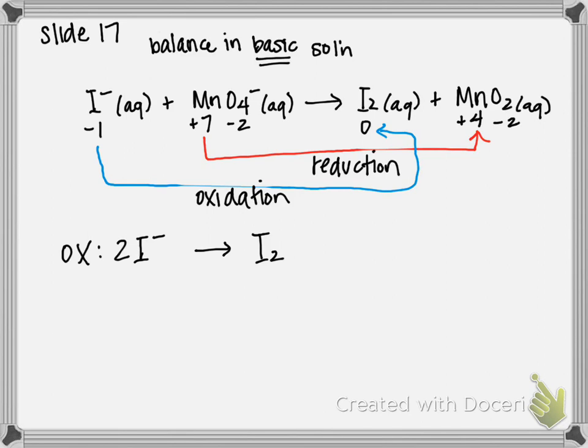And this is also going to make a difference when we start counting up electrons. We're going from negative 1 to 0. Technically one electron is transferred, but since I have two iodines, it's going to be a total of two electrons transferred. And we'll go over that when I get to that step in the balancing. Then reduction is going to be MnO4 minus gives you MnO2. So that's step 2.